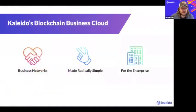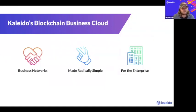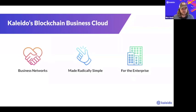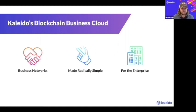Kaleido at a very high level is defined by three core characteristics. We're built for modern business networks — completely industry and use case agnostic. We have clients spanning capital markets, supply chain, government, energy — you name it. The use case and the solution can be built and provisioned very, very easily on Kaleido.